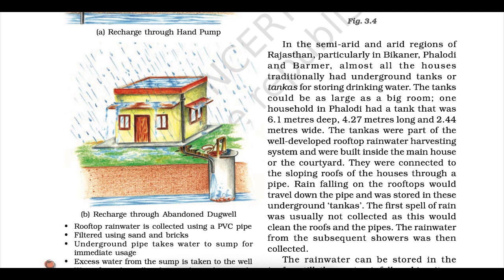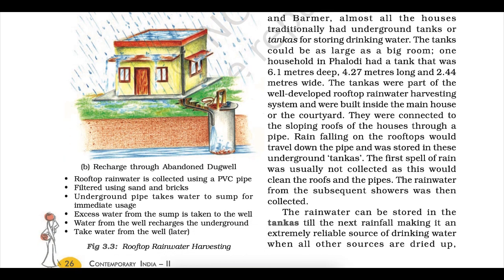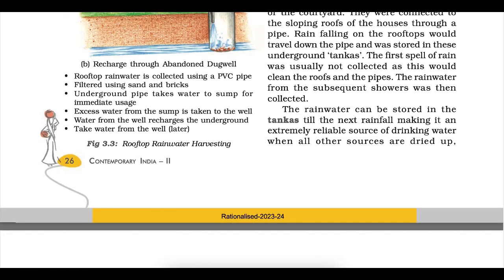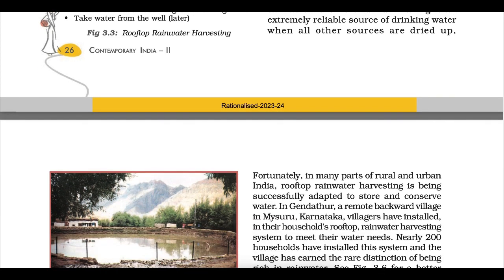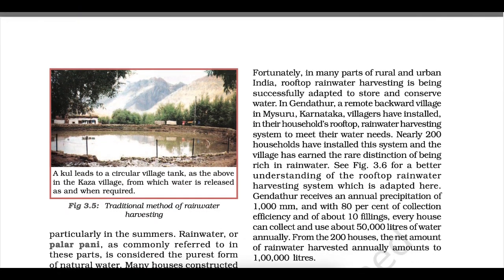In the semi-arid and arid regions of Rajasthan — particularly in Bikaner, Phalodi and Barmer — almost all houses traditionally had underground tanks called tankas for storing drinking water. A tank could be as large as a big room; one household in Phalodi had a tank 6.1 metres deep, 4.27 metres long and 2.44 metres wide. The tankas were part of a well-developed rooftop rainwater harvesting system, connected to sloping roofs through pipes. The first spell of rain was not collected, as it cleaned the roofs and pipes; subsequent showers were stored. Rainwater, locally called pallar pani, is considered the purest form of natural water.